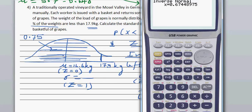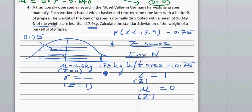Let's say this is 0.6744. The z-score for that is going to be 0.64. In other words, 17.9 kg is 0.69 standard deviations to the right of mu.